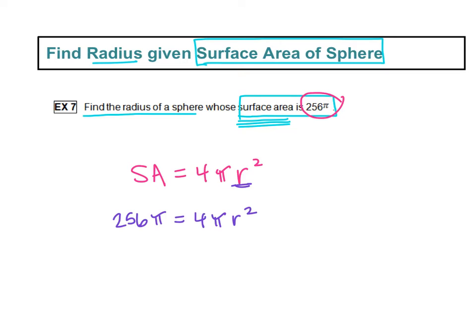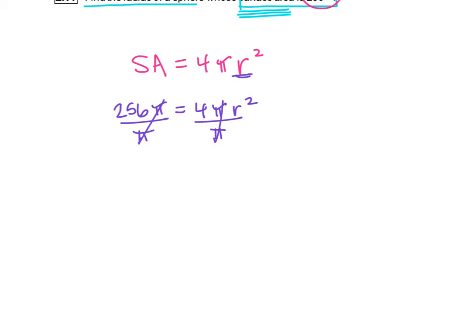Now we have this nice little equation where we can solve for our radius. A couple things I want to point out. This is 256 times π, so we have multiplication there. And this is 4 times π times r², so that's a lot of multiplication. What I do notice is we have a π in each one, so that's what I like to get rid of first. If you divide both sides by π, those π's are going to cancel, leaving us with an easier equation to solve that doesn't have the π.